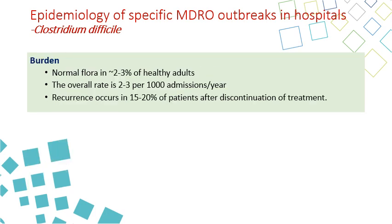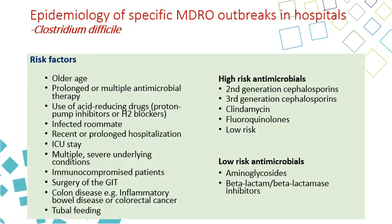The burden: Clostridium difficile is normal flora in two to three percent of healthy adults. The overall rate is two to three per 1,000 admission years. Recurrence happens in 15 to 20 percent of patients after discontinuing treatment. Risk factors include old age, prolonged or multiple antimicrobial therapy — this is very important — use of acid-reducing drugs including proton pump inhibitors and H2 blockers, exposure to an infected roommate, recent or prolonged hospitalization, ICU stay, multiple comorbidities, immunocompromised status, surgery, colon disease especially inflammatory bowel disease, and tube feeding.